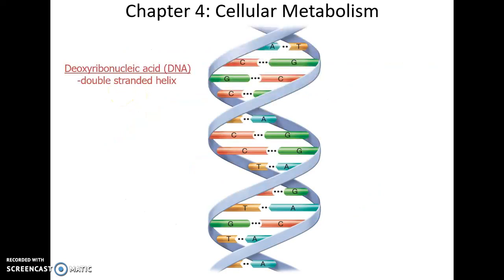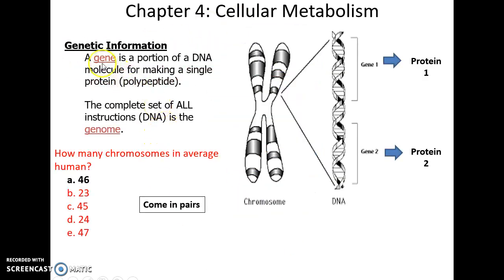Moving on to other processes in the cell: DNA is a double-helix molecule that stores information as genetic information in the form of genes. A gene is a tiny portion of sequence that leads to the production of a specific protein — sort of like instructions for making a protein, with each gene coding for its own protein.